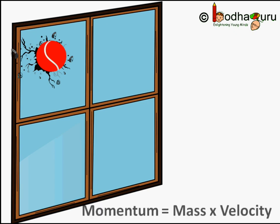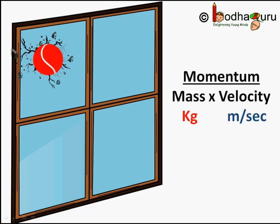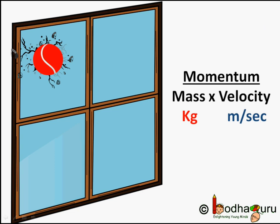Momentum is the product of mass and velocity. The momentum of an object has the same direction as the velocity. The unit of momentum is the unit of mass multiplied by the unit of velocity. For example, mass is in kg and velocity is in meters per second, so the unit of momentum is kg meter per second.